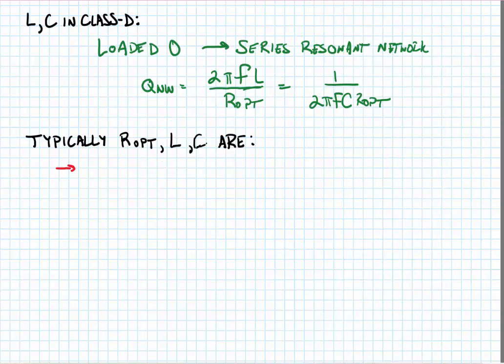Now, typically in a class D amplifier, r opt, l, and c are realized by a matching network that's matching an antenna impedance of, say, 50 ohms to the optimum termination resistance, and it happens to be a bandpass network as all of our matching networks are.